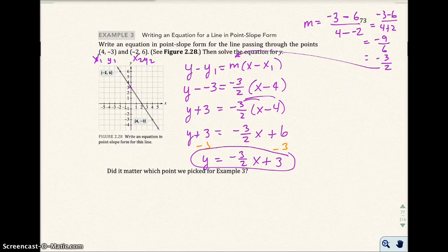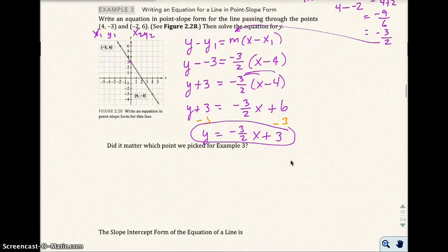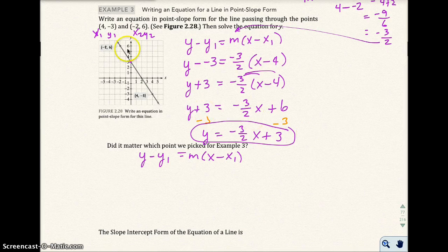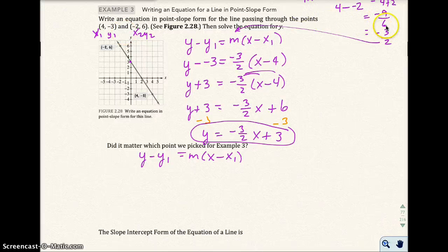Now you notice that I picked (4, -3) when I used my point. But it didn't really matter which point we picked, for example 3. And let's see if that does matter. So here I have my point-slope form for line.